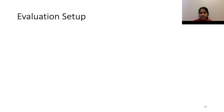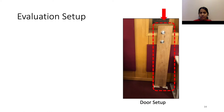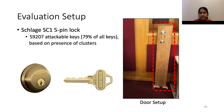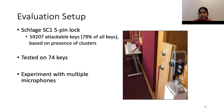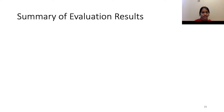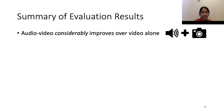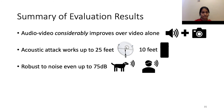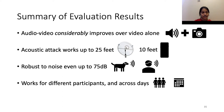We now present the evaluation of Kinergy. For the experiment, we created a door-like setup and installed two locks of the Schlage SE1 lock type. This model has a total of 59,207 vulnerable keys, based on the presence of clusters. We test our system with a total of 74 keys and also perform experiments with multiple microphones including smartphone, parabolic mic, and condenser mic. The acoustic attack works well up to 25 feet with a parabolic mic and up to 10 feet with a smartphone mic. Our attack is also robust to noise such as dog barking and human speech up to 75 dB noise level. Finally, our attack works well for different participants and is also consistent across days.